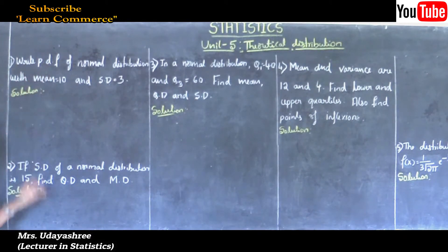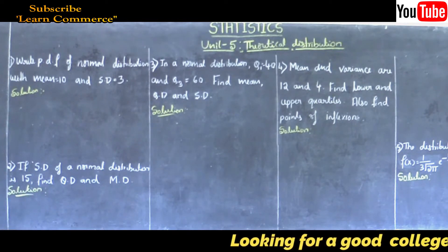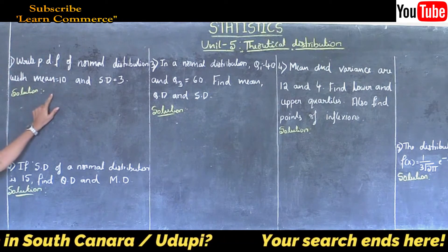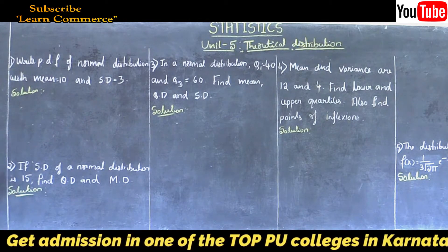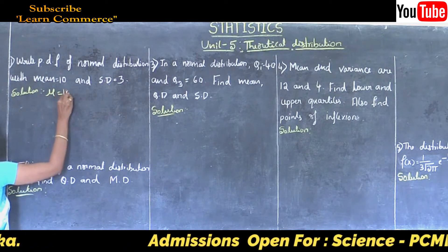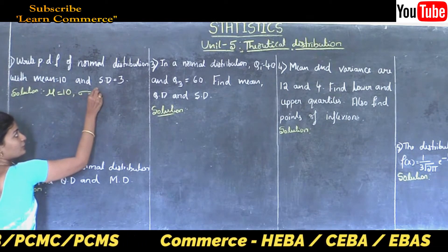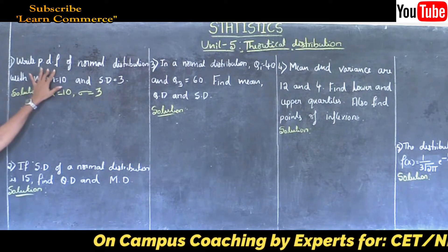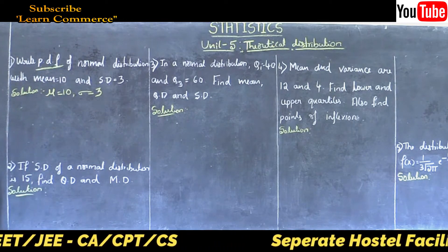The first problem: write the probability density function of normal distribution with mean equal to 10 and standard deviation equal to 3. Here, the given observations are mean and standard deviation. Mean is denoted by mu, so mu is equal to 10, and standard deviation in terms of sigma, so sigma is equal to 3.